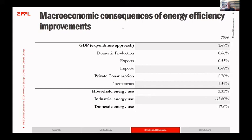Energy efficiency also has a potentially positive impact on the economy because the economy becomes more efficient, and that shows in the results. The change relative to the steady state scenario shows the impact is positive but marginal compared to the scale of energy efficiency improvement taking place. GDP grows by roughly 1.7 percent, mainly driven by private consumption. Household energy use increases because of income effects, but industrial and domestic energy use actually decreases — though much less than it would without the rebound effects.